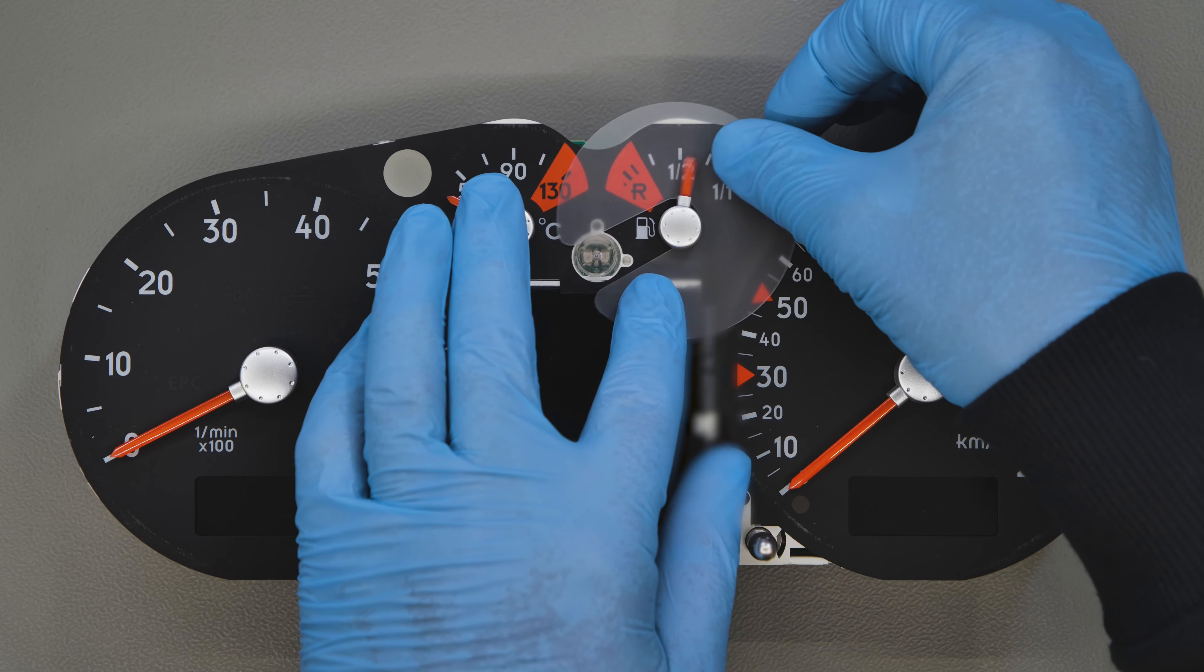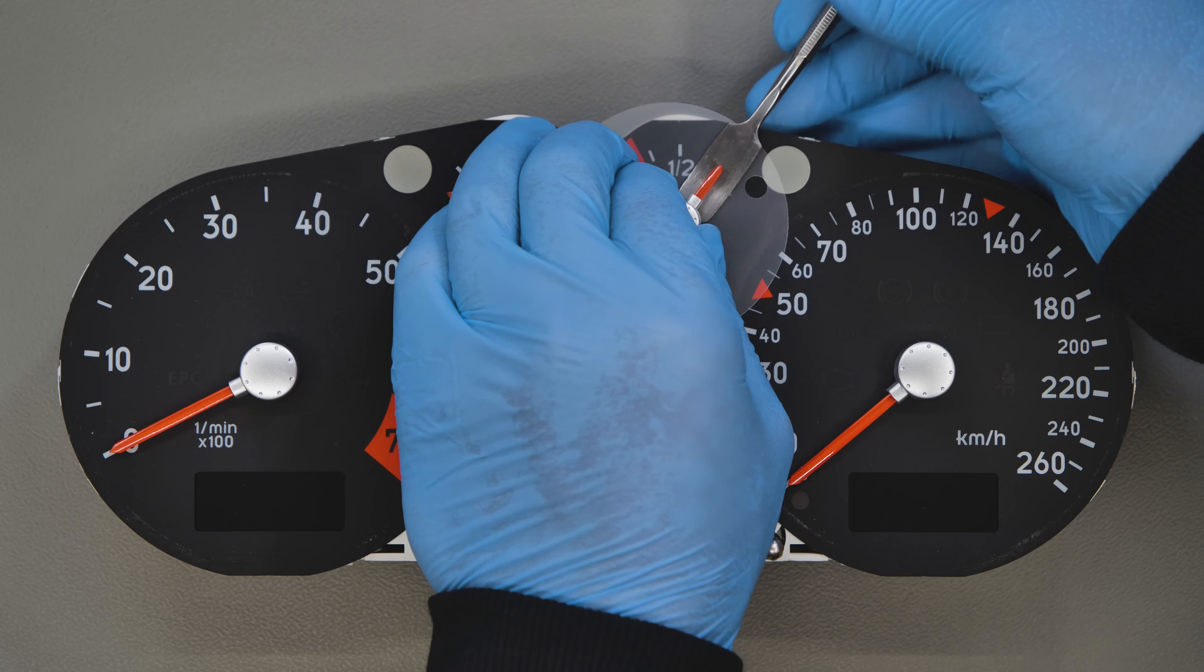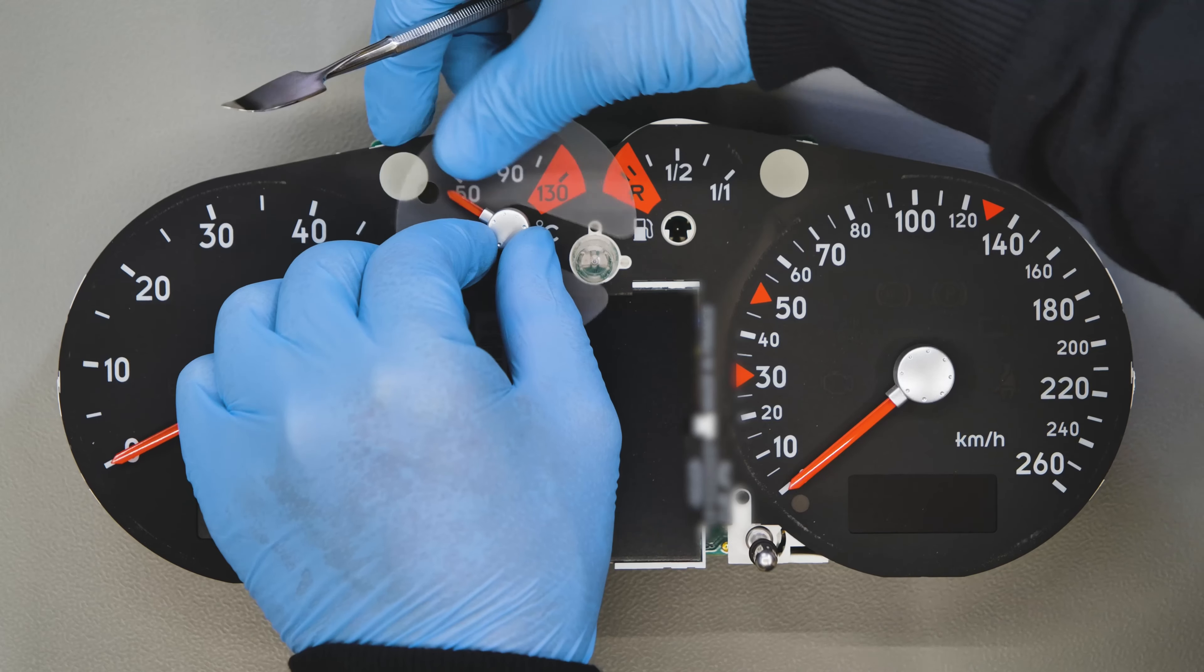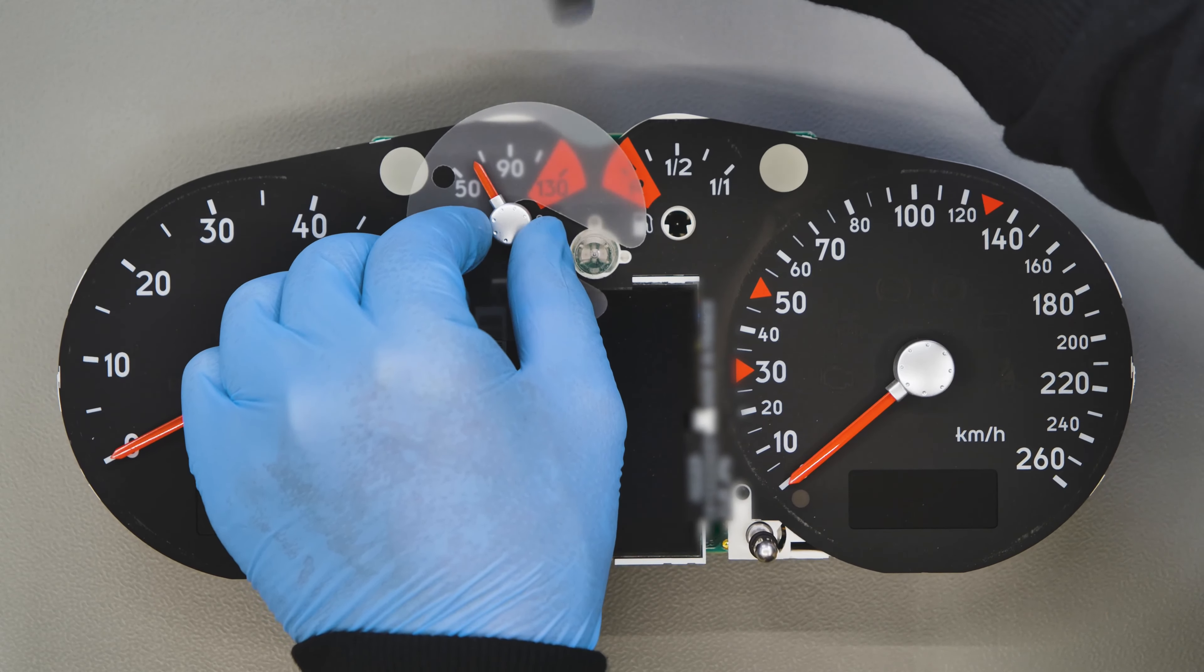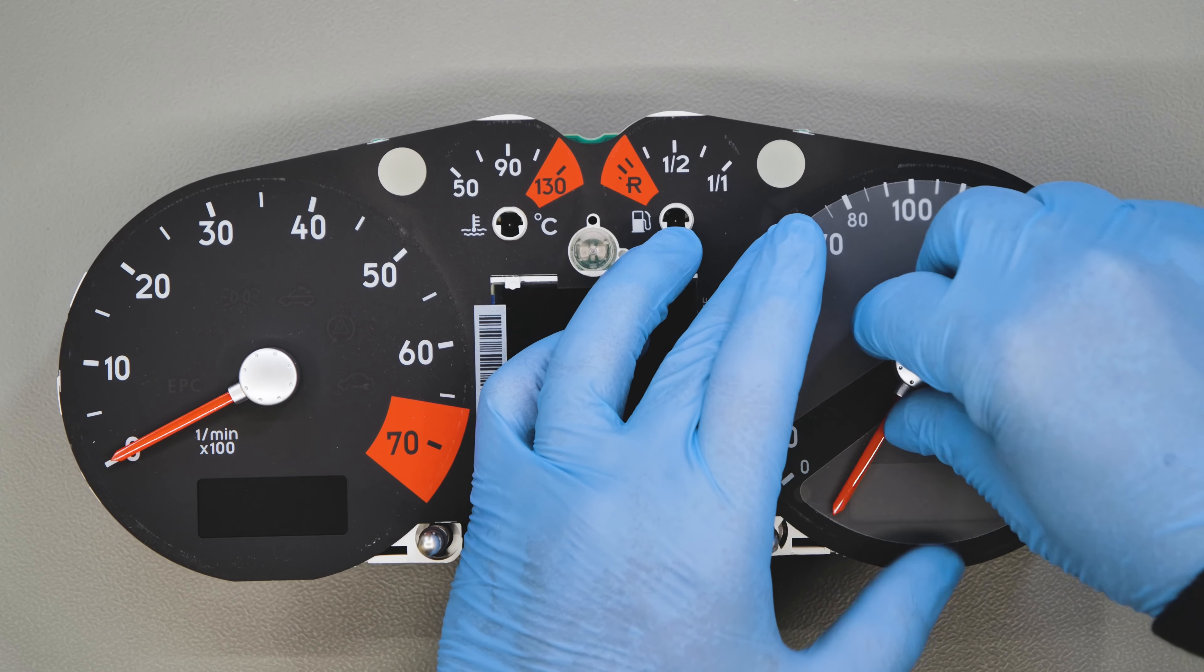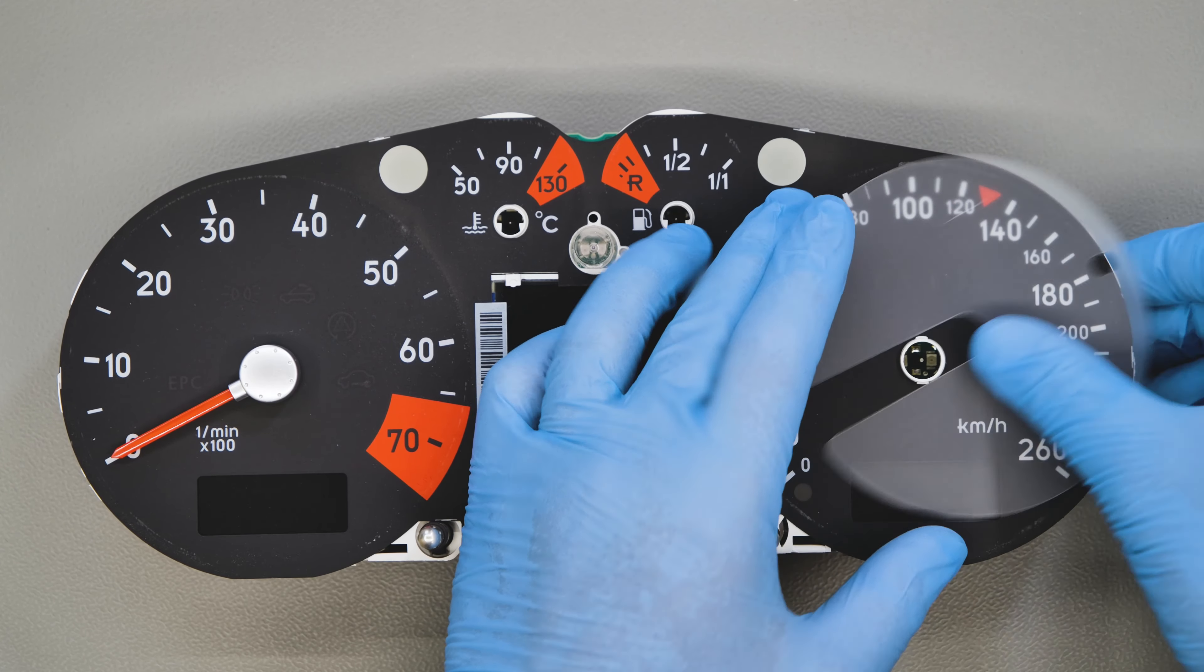To remove the fuel and water temperature gauges, insert the protective disc and lift up each pointer using the spudger to remove. Remove the rev counter and speedometer pointers by turning and pulling gently.